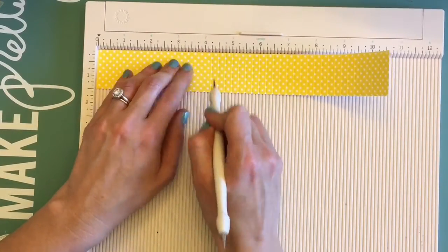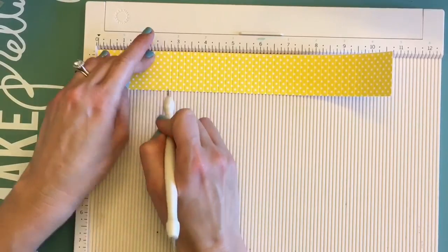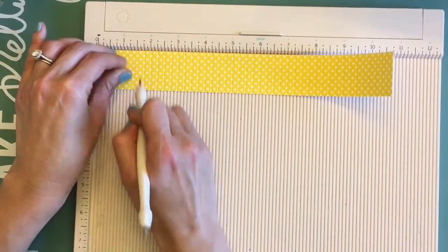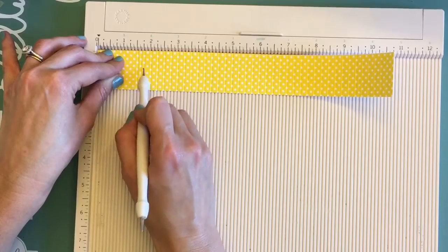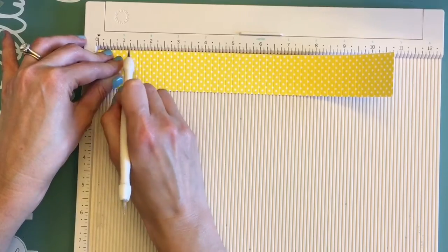I'm going along every fourth of an inch and creating a score line. I feel like I should have gone about maybe a half inch because I kind of like the rosettes to be a little bit thicker.